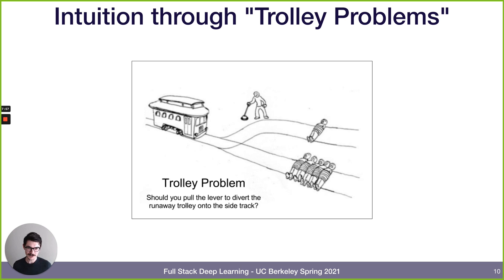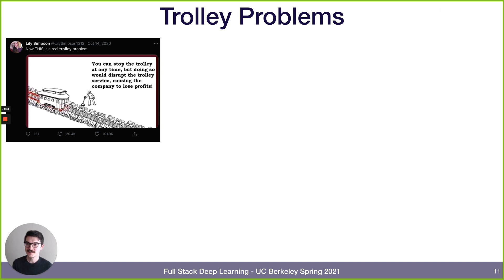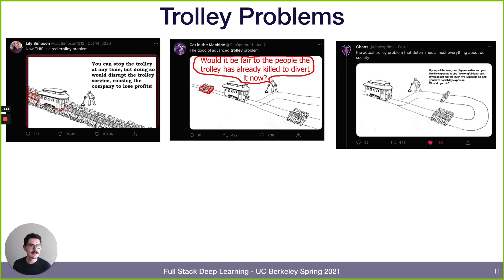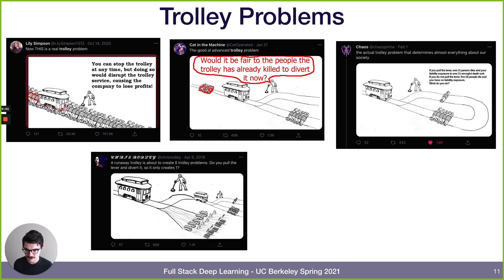The classic trolley dilemma: a trolley is about to run over five people, but you could divert it and it would only run over one. It's designed to elicit intuition — would you rather kill one person or five? Or perhaps duty-based ethics means you have a duty not to kill no matter what, so if you pull the lever you're responsible. There are also some meme versions: one about corporate profits, one about liability exposure — if you don't pull the lever, five die but you have no liability.